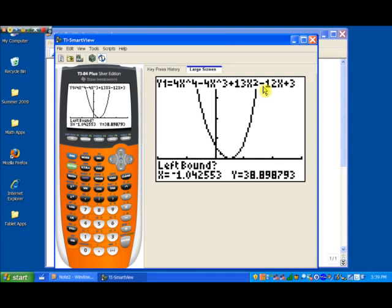Now, it says here's our function at the top. It says find a left bound. In other words, find a value that is to the left of where you think the zero might be. Well, this says x equals negative 1. I think that's a good left bound. I'll go ahead and hit the enter key.